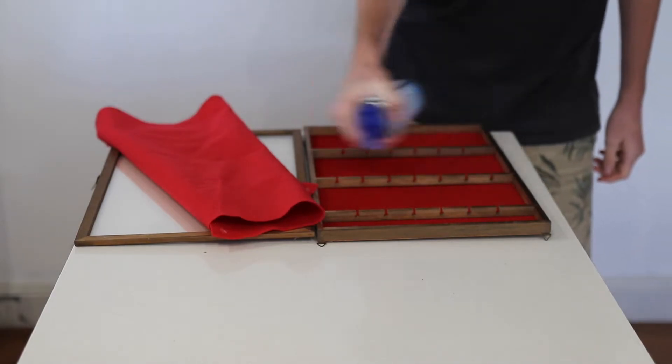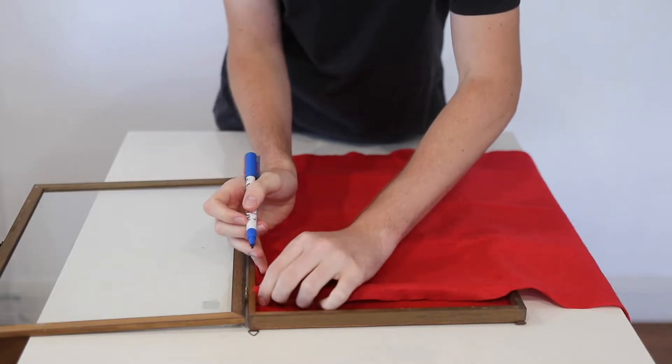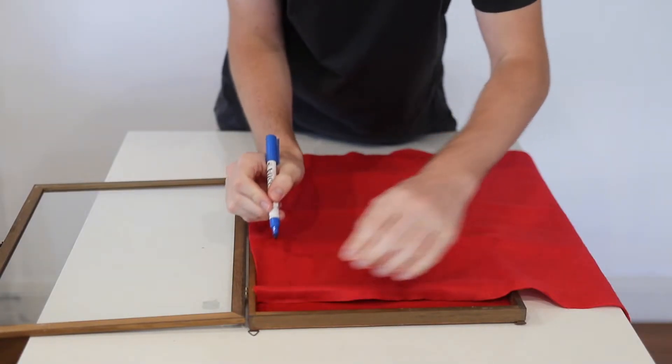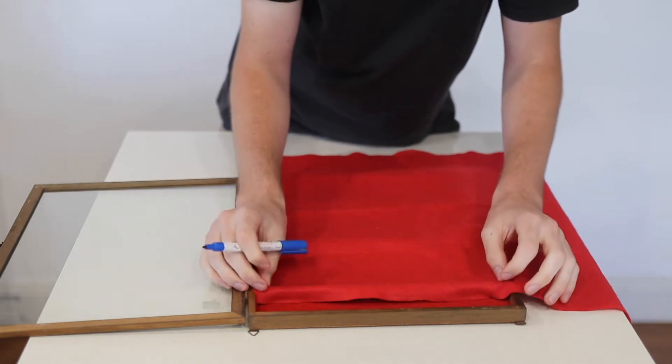Now just using an air duster I'm going to remove some of the dust from the inside of the frame to clean it up a little bit more. Now I don't need this to be exactly perfect, so I'm just going to fold the felt over the wooden inserts and mark out a line with a permanent marker.